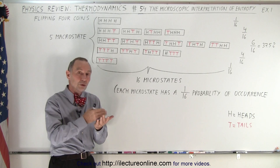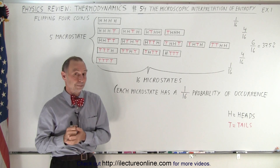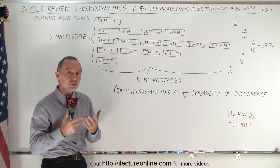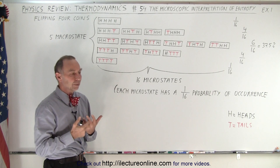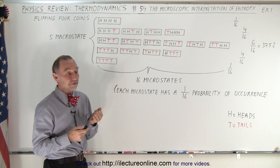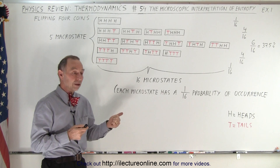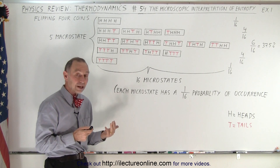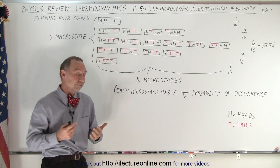Now the order of each coin does matter. So what are the possible combinations we could have? With four coins you can have: all tails, one tail and three heads, two tails and two heads, three tails and one head, or four heads.